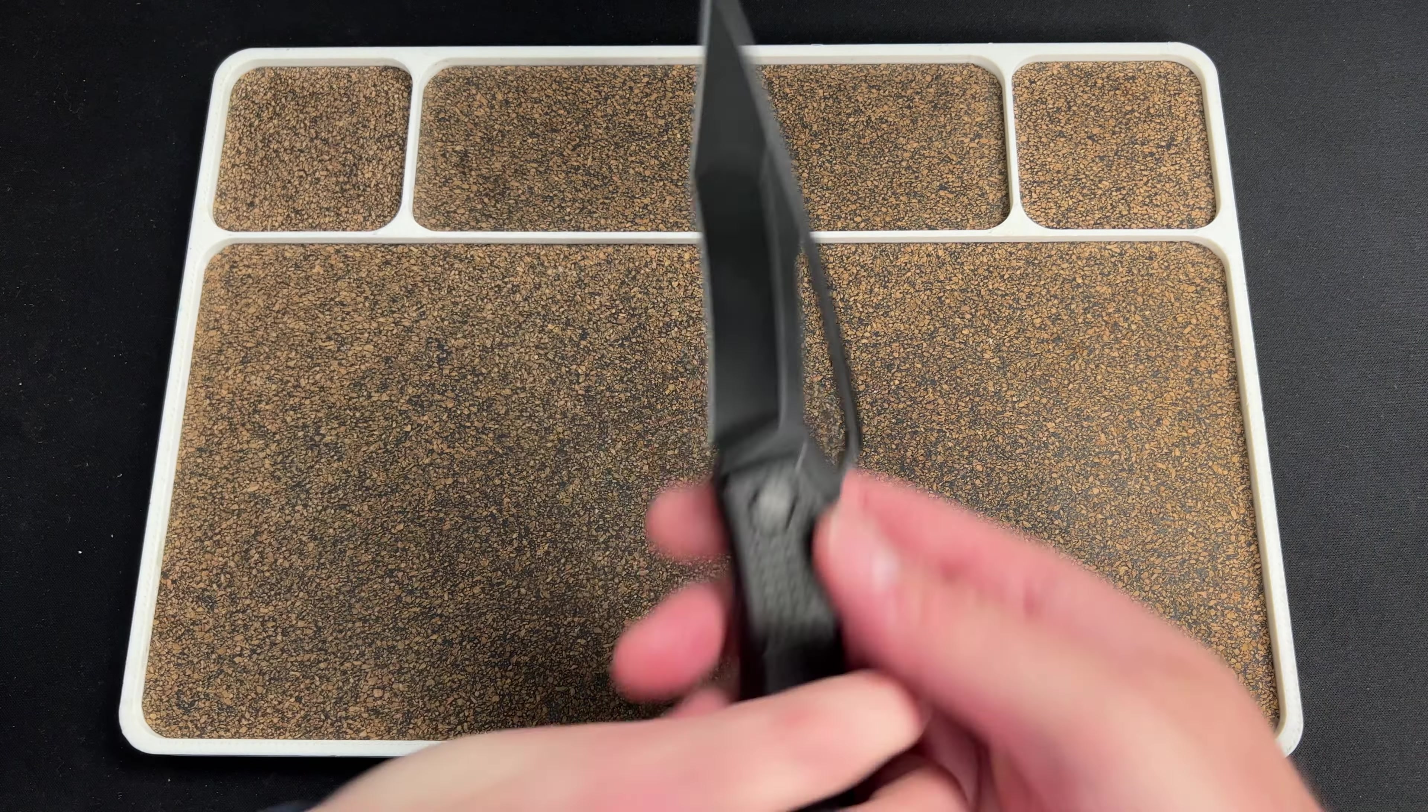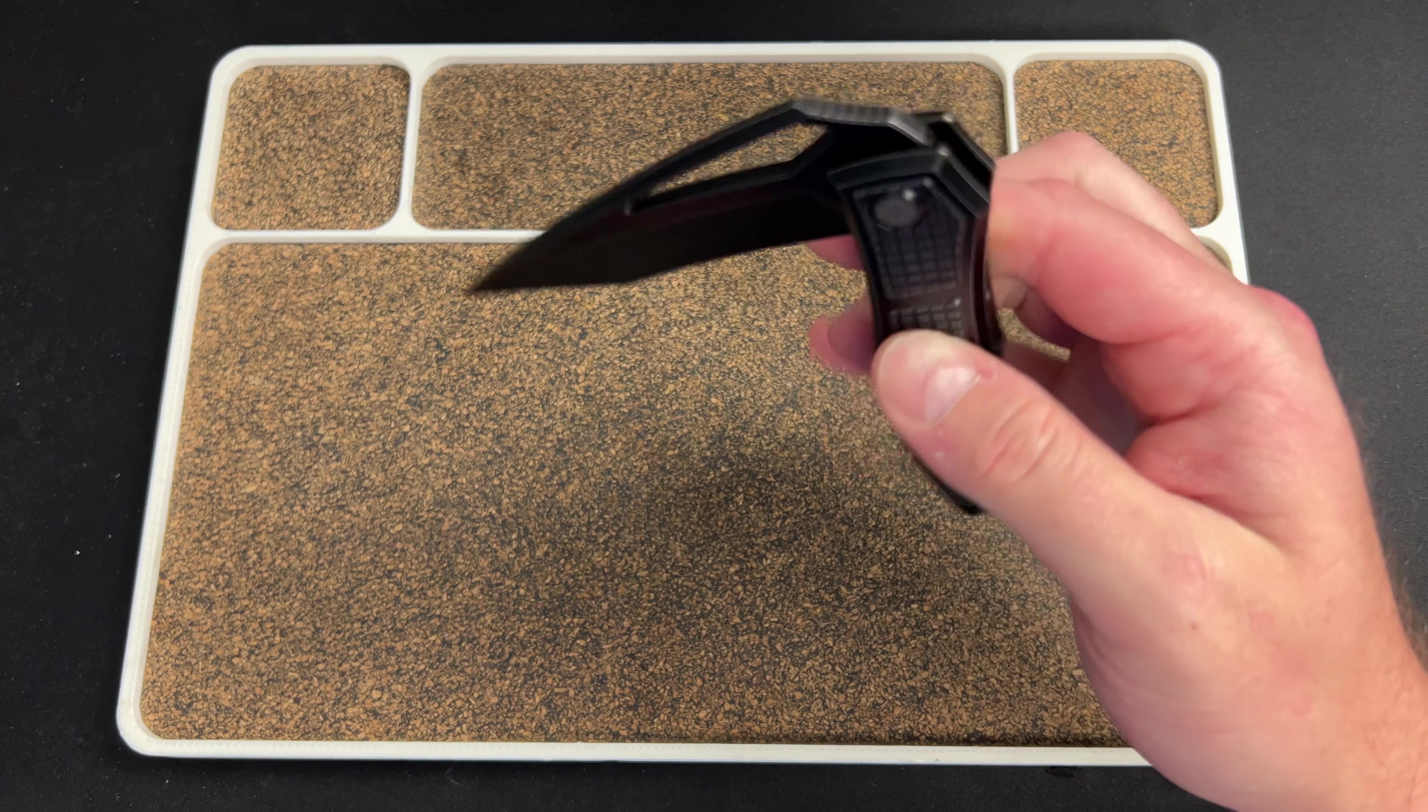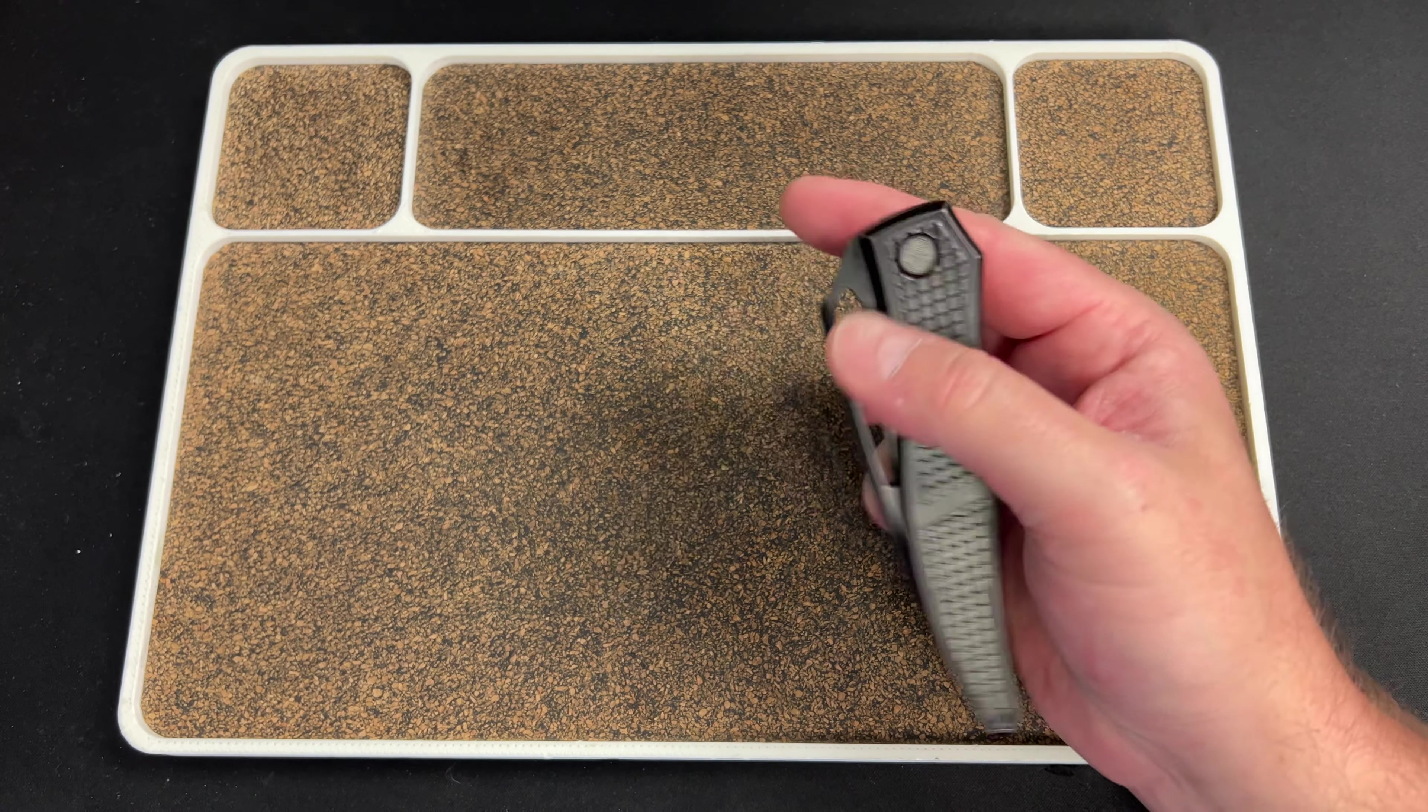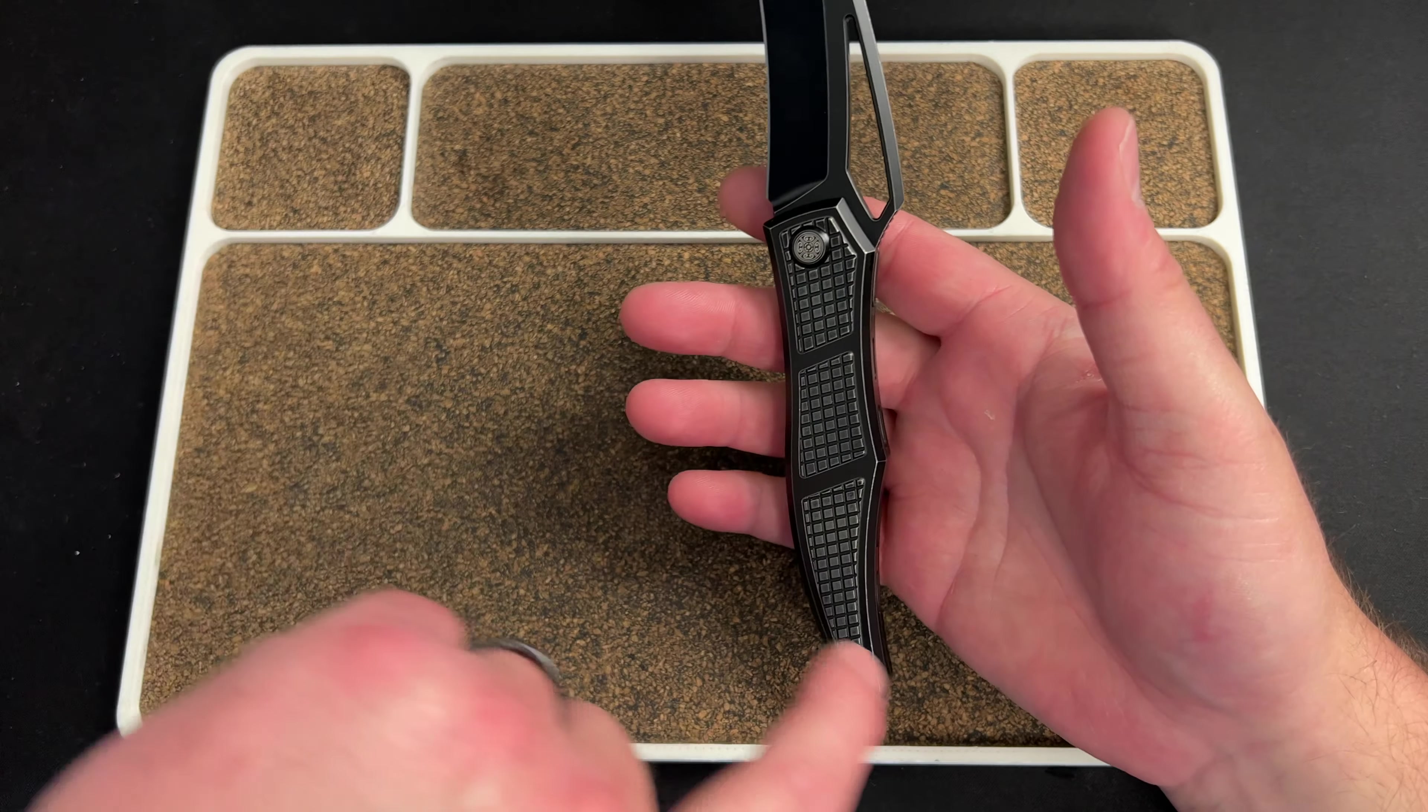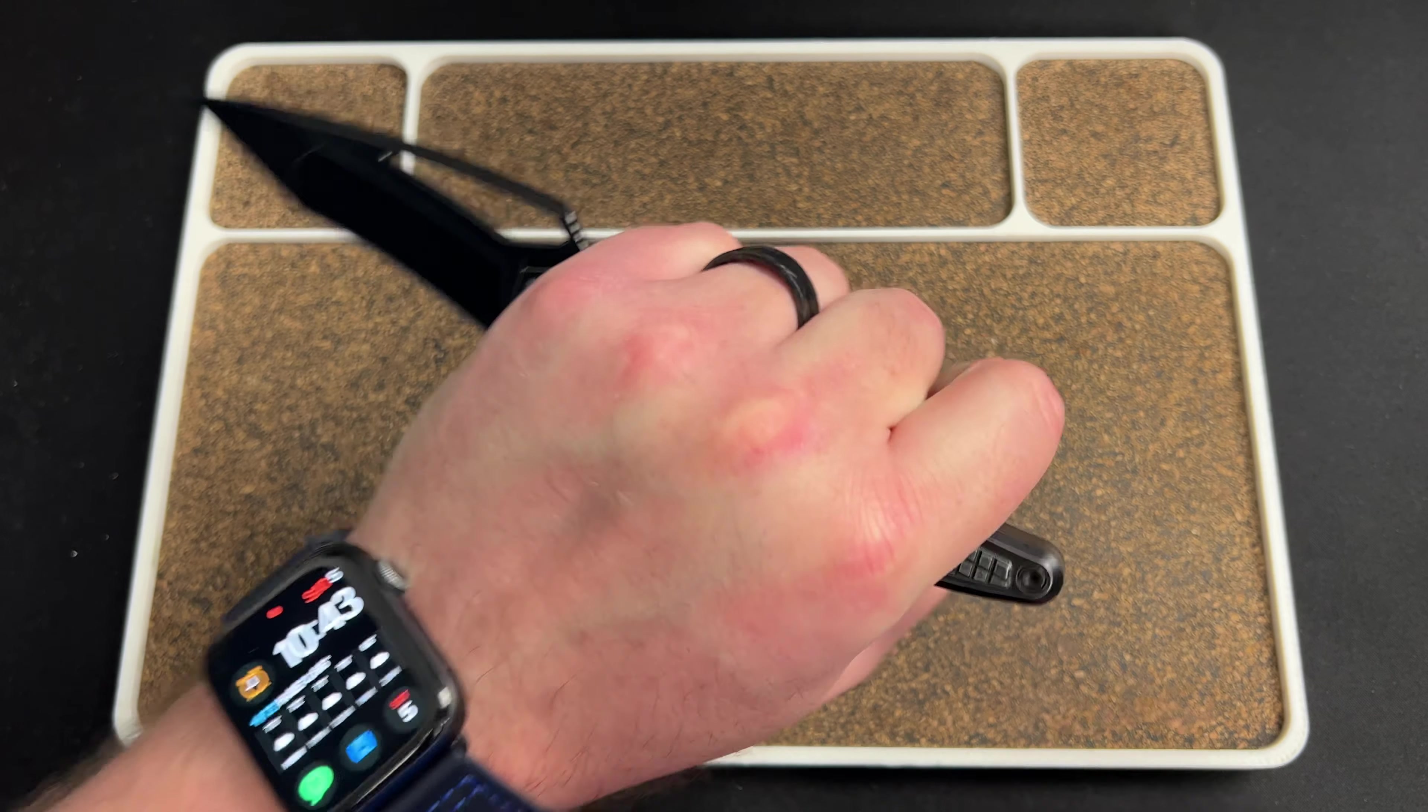You have what feels like a hollow grind, shallow hollow grind back here, flat grind up here keeping a nice strong tip because this is a self-defense style knife. Now I will say after holding it, it's not as much of a pikal as I'm used to seeing. Usually they have a bit of a curve to them.